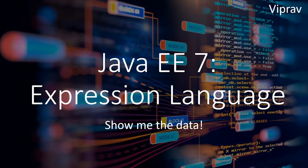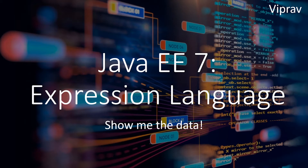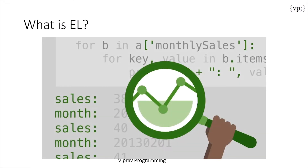Welcome everybody to yet another Java EE 7 tutorial. In this chapter we'll be talking about Expression Language, and in this ninth chapter we'll be talking about why it's the absolute best — if not one of the best ways — to access data from your Java classes to your web application presentation. Let's take a look at why EL is the best way to access data.